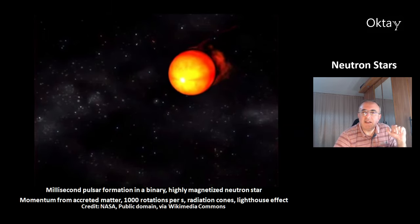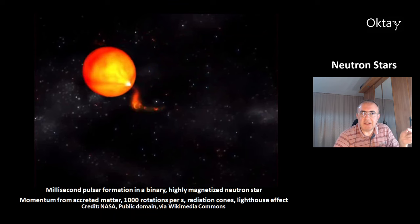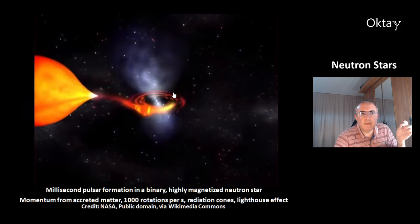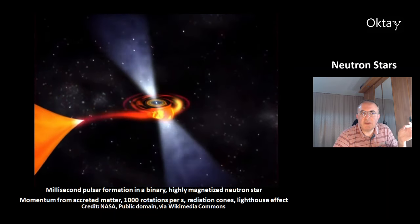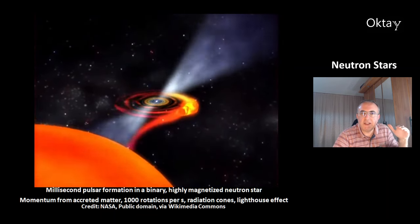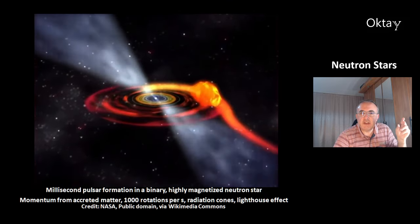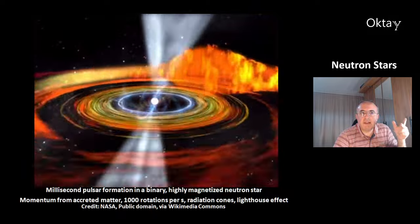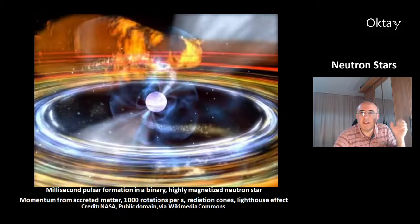This is another animation showing the formation of a millisecond pulsar in a binary system. A pulsar is a highly magnetized neutron star. It gets momentum from the accreted matter that flows into the pulsar. Its rotation can reach 1,000 rotations per second. You can see the two radiation cones, which create the lighthouse effect.